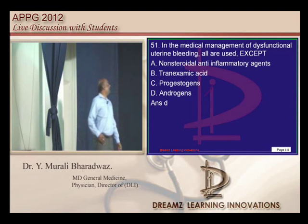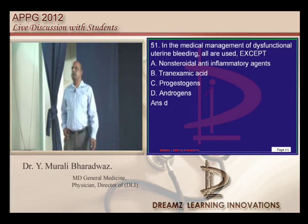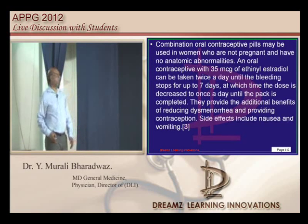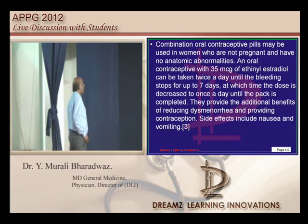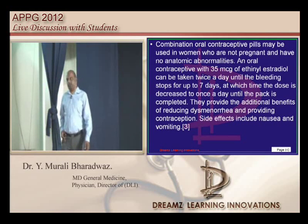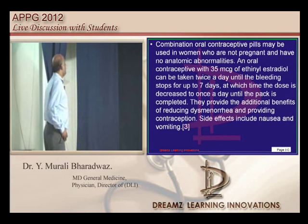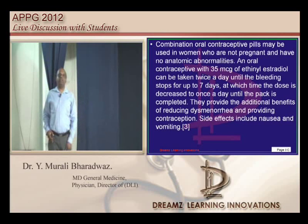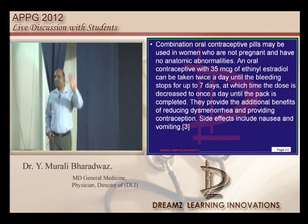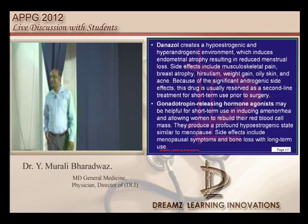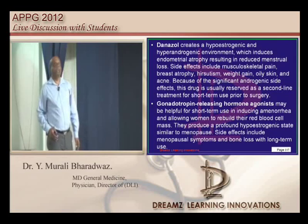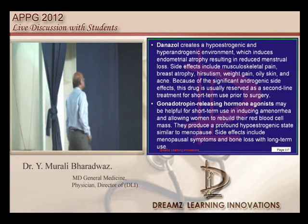Dysfunctional uterine bleeding — how do you want to manage? There are many options: combined OCPs, progesterone-only pills, tranexamic acid, GnRH agonists, and rarely danazol. Danazol has an androgenic effect, so androgens are also used. The first three options — combined OCPs, progesterone-only pills, and tranexamic acid — are definitely used in the management of dysfunctional uterine bleeding.